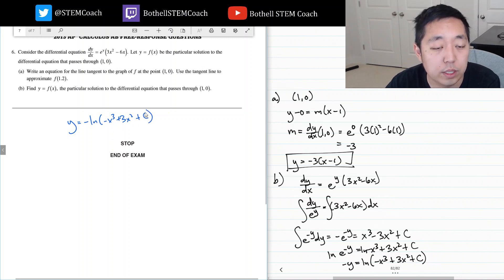Now the thing is I don't know what c is, so I need to plug in some points. It passes through one zero, so x equals one. So I have zero equals negative natural log of negative one—one cubed is one, that makes that negative—plus three plus c. In order for this, the inside of this has to be one. Basically, negative one plus three plus c has to equal one because the natural log of one is zero. And so c equals negative one. So y equals negative natural log minus x cubed plus three x squared minus one.